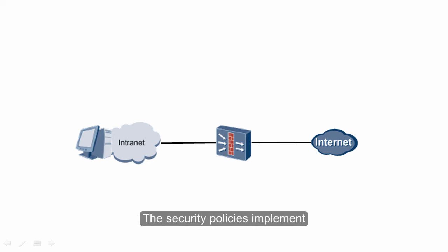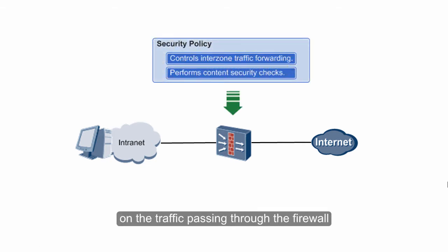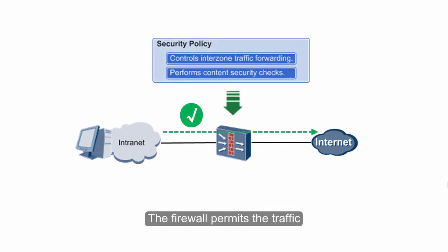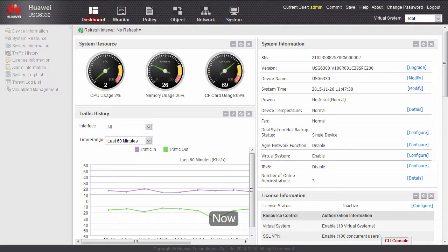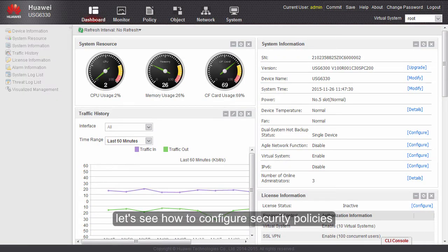The security policies implement security checks on the traffic passing through the firewall. The firewall permits the traffic allowed by the security policies, and discards the traffic that is not allowed. Now, let's see how to configure security policies.